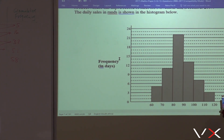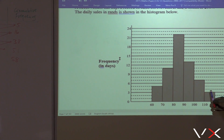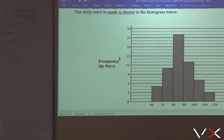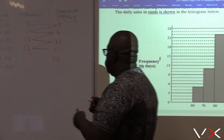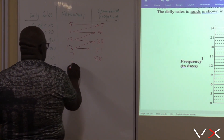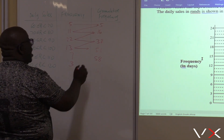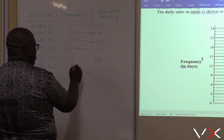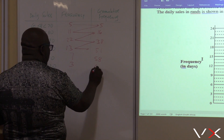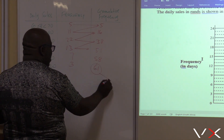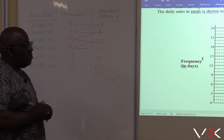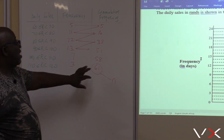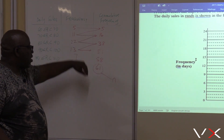Between 110 and 120 — it's exactly on the mark. It's 1, 2, 3 — it is 3. The last cumulative frequency is 58 plus 3, which should be 61. Remember, this value will be your value of N. The last value you find in the cumulative frequency gives us the number of terms — our N.